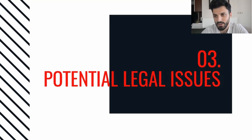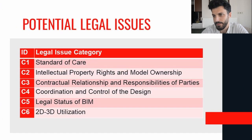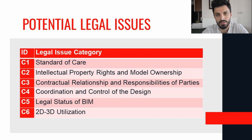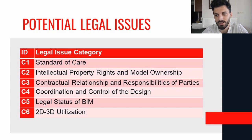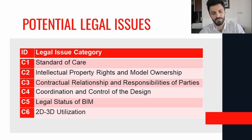In the potential legal issues part, I will present these six categories: standards of care, intellectual property and model ownership, contractual relationship and responsibility of parties, coordination and control of the design, legal stages of BIM, and finally the sixth category: 2D/3D utilization.